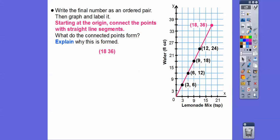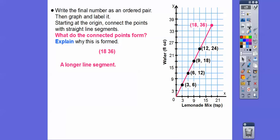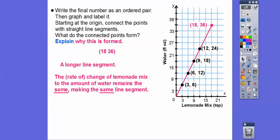These are all on the same line segment. What do the connected points form? They form a nice straight line segment. Why is this formed? The reason is the rate of change — they call it that in algebra — the rate of change of lemonade mix to the amount of water remains the same. It was always y equals 2x, so it makes the same line segment. Later on we're going to do slope: we go up 2 over 1, up 2 over 1, y equals 2x. So whatever x we go over, y goes up 2. It was always the same, y equals 2x.